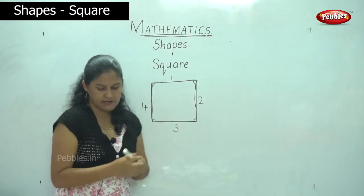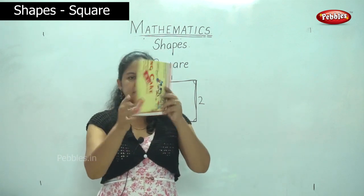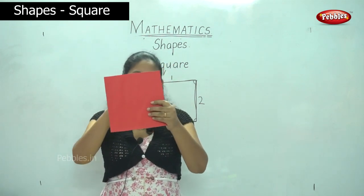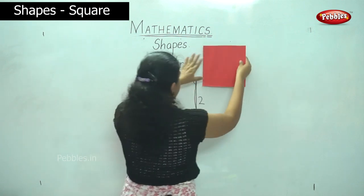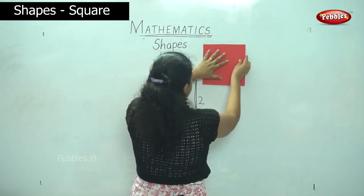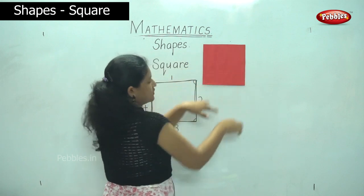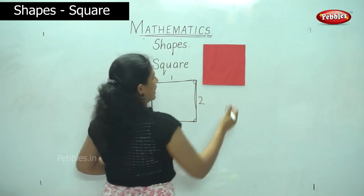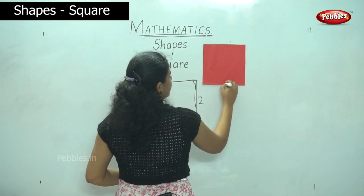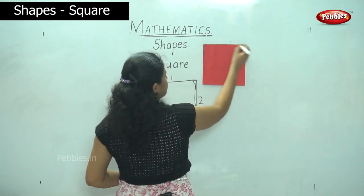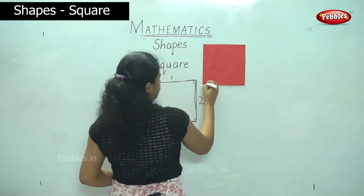So can you see this placard in my hand? This is a square. You will find that all the four sides of a square and all the angles are also of equal length. The angles are also equal.